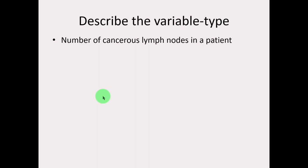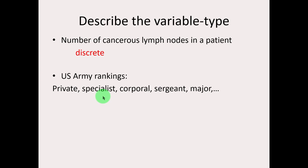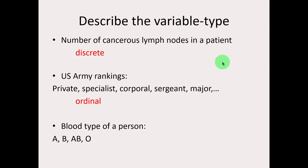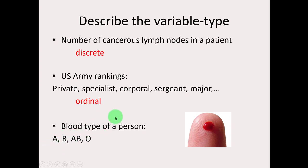Number of cancerous lymph nodes in a patient — you're counting them, so it's a discrete quantitative variable. US Army rankings — there appears to be some order to those, so that's an ordinal categorical variable. Blood type of a person — that would be categories, and is there a particular order to them? Not necessarily — you can shuffle them up and it's just a list of blood types. So that would be a nominal categorical variable.